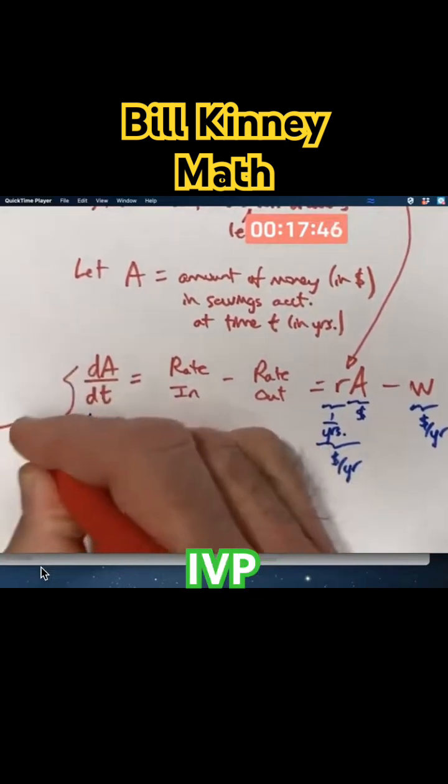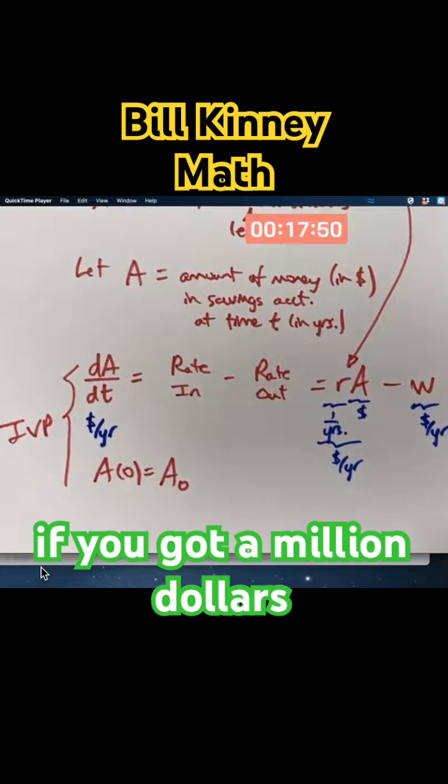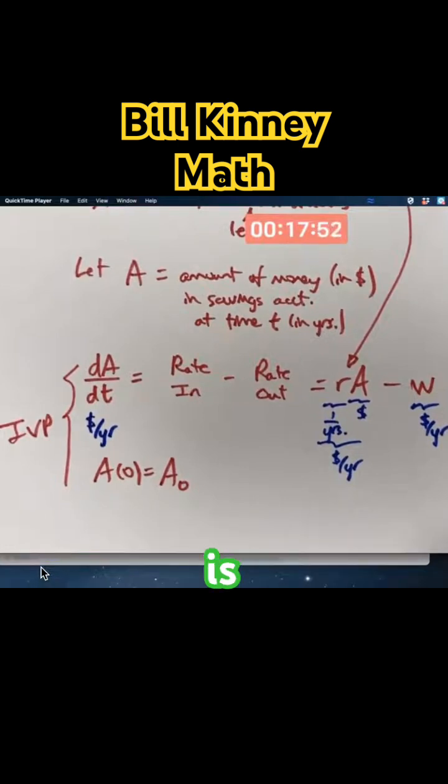And there is my IVP, the differential equation with the initial condition. Yes, if you've got a million dollars, A-naught is a million.